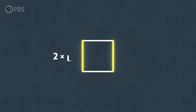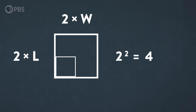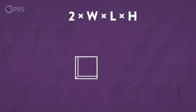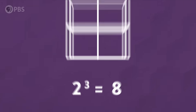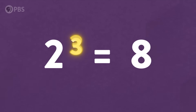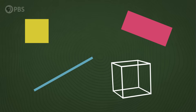If we do the same to a square — double its length and width — you get 4 times as much square, or you scale it up by 2 to the 2. Do it to a cube, double the length, width, and height, and we get 8 times as much cube, or 2 to the 3. This power right here is the dimension Mandelbrot was talking about, and for simple shapes it matches with our usual idea of dimension.